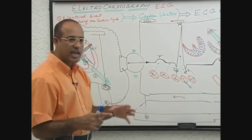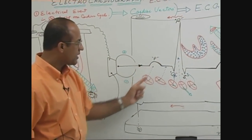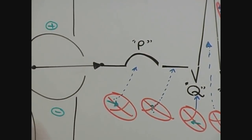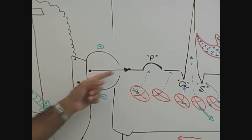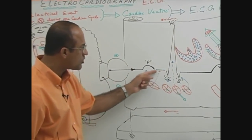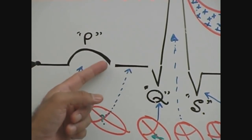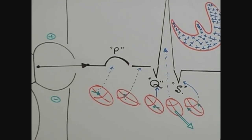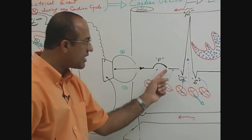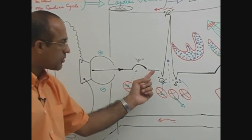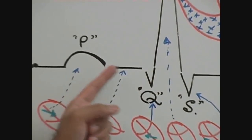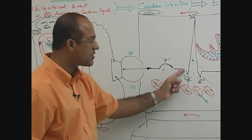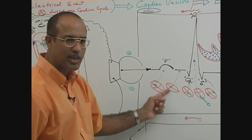Now to recap: the P wave represents atrial depolarization. The isoelectric line — a straight line when the needle is not fluctuating — that starts at the end of the P wave and terminates at the beginning of the QRS complex is called the PR segment. Ideally it should be called the PQ segment, but since the Q wave is not always seen, it is called the PR segment. This PR segment represents AV nodal delay.